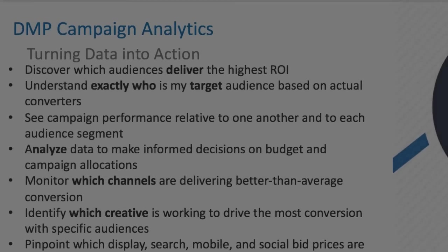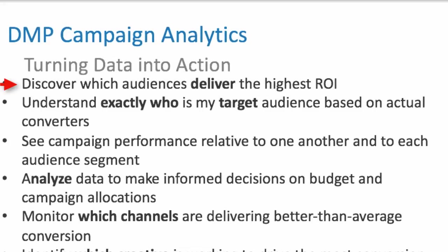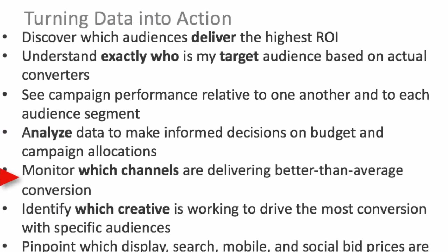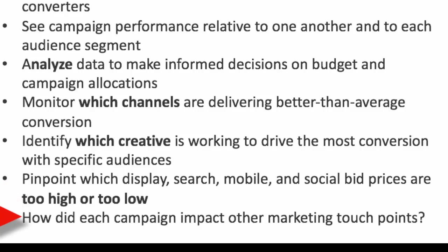How do we turn all this data into action? Here's what a DMP can provide: find out which audiences deliver the highest ROI, understand exactly who your target audience is based on actual converters, see campaign performance relative to one another and to each audience segment, analyze data to make informed decisions on budget and campaign allocations, monitor which channels are delivering better-than-average conversion, identify which creative is driving the most conversion with specific audiences, pinpoint which display, search, mobile, and social bid prices are either too high or too low, and determine how each campaign impacted other marketing touch points.